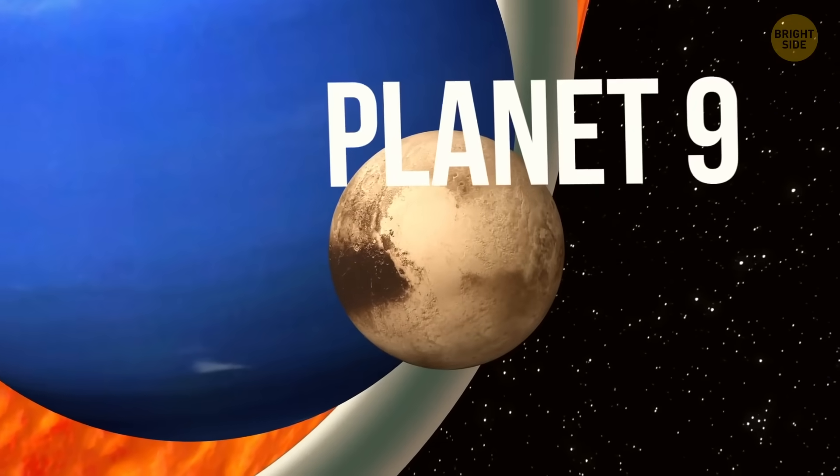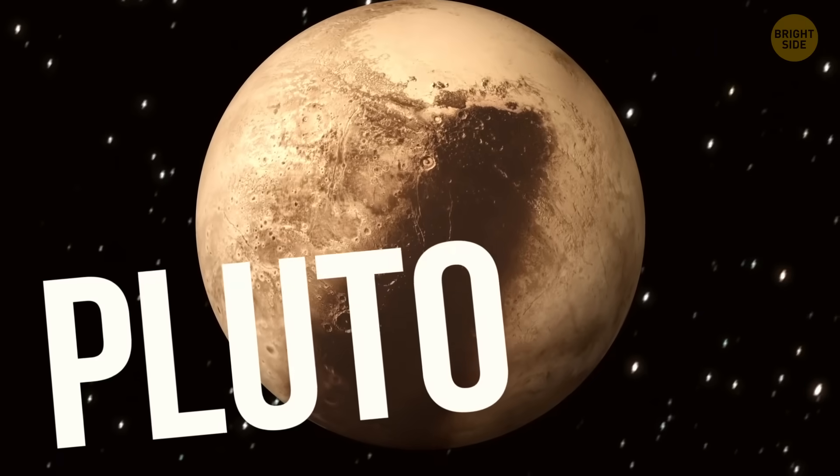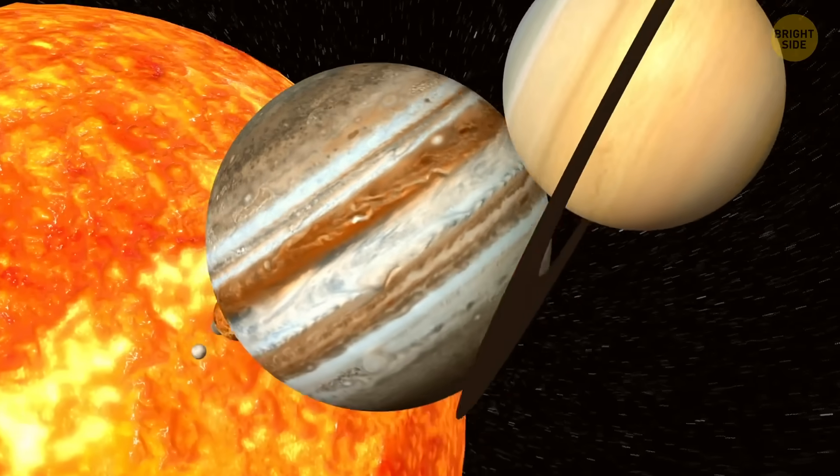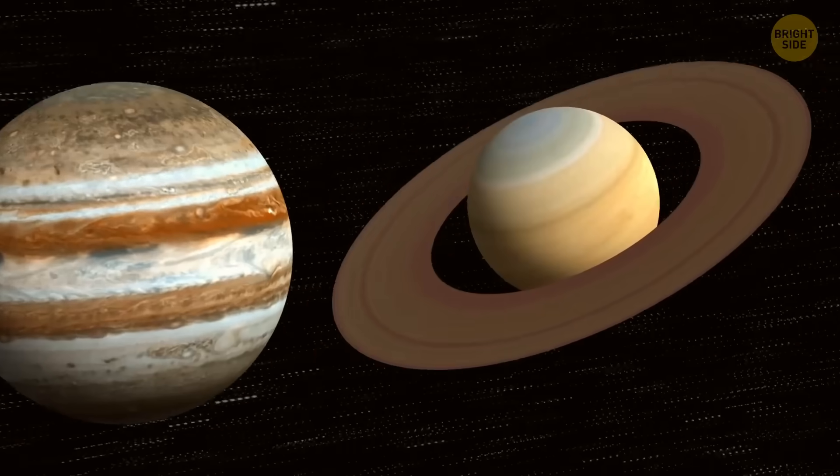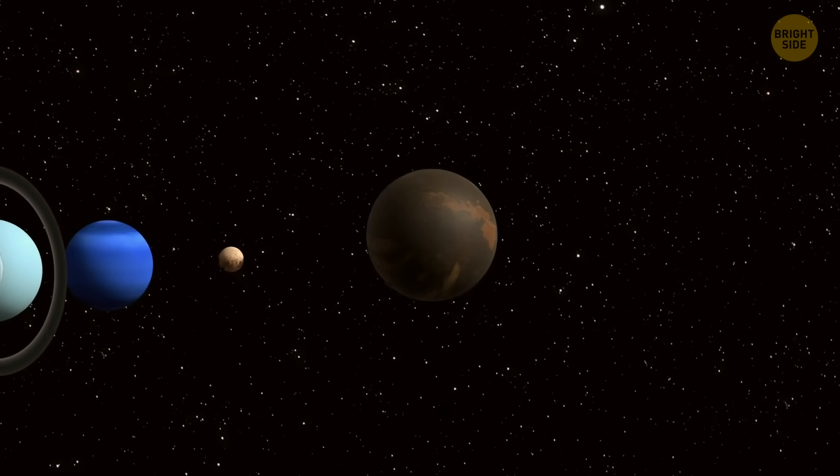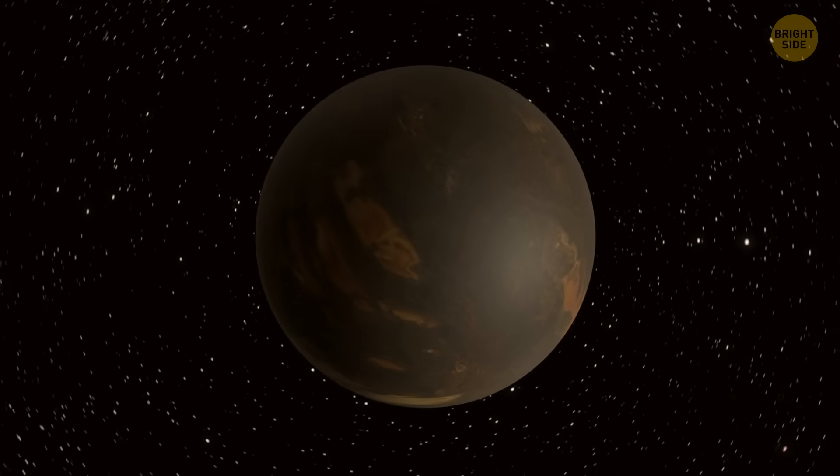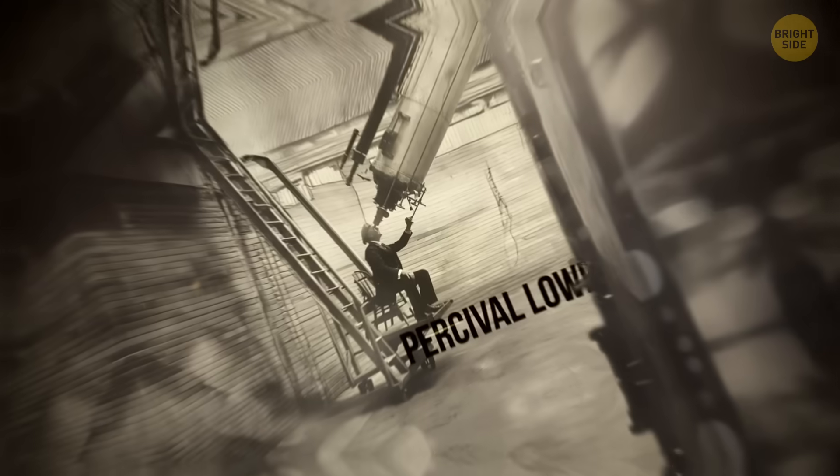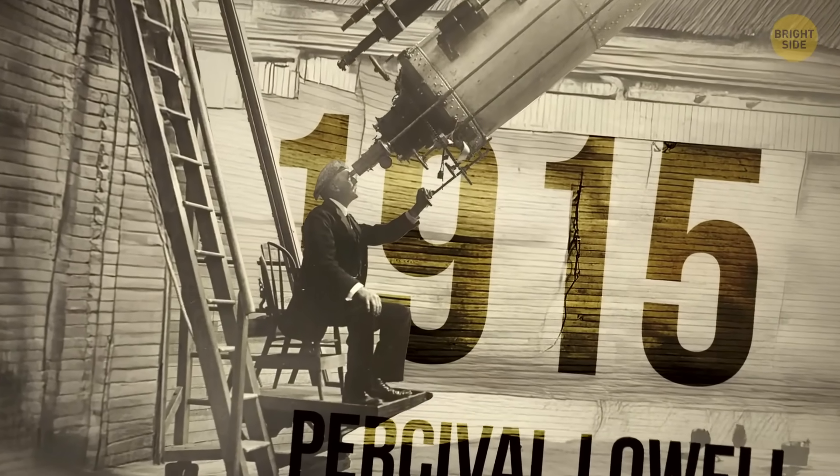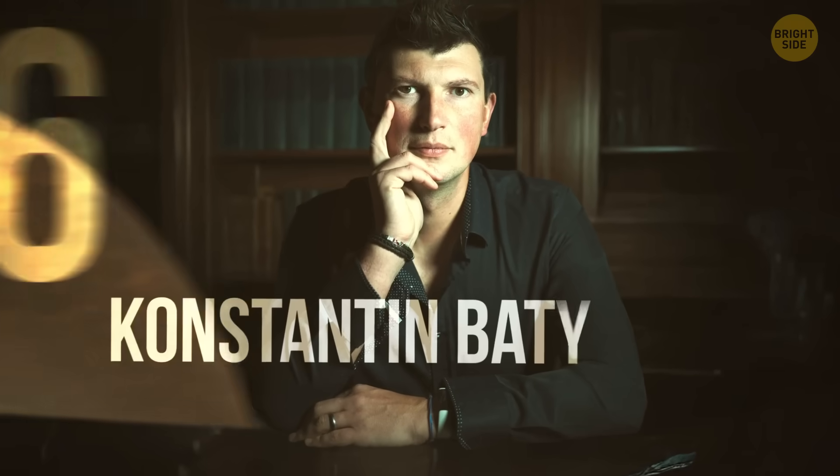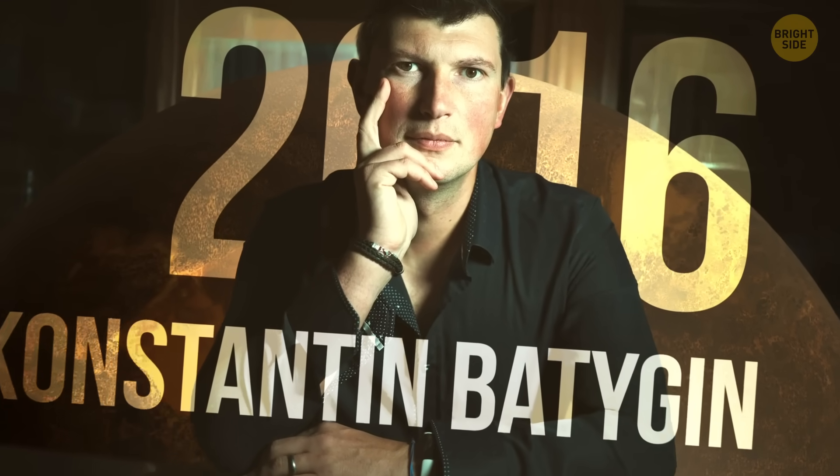Have you heard about Planet 9? No, not Pluto. We're talking about something lurking on the outskirts of the solar system. A mysterious planet that exists in our solar system that we haven't yet discovered. We've been looking for it for years. But finally, it seems like scientists found a key to solve this mystery.